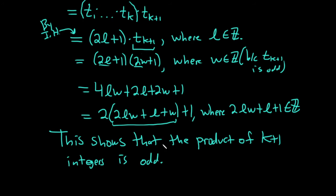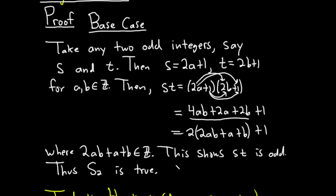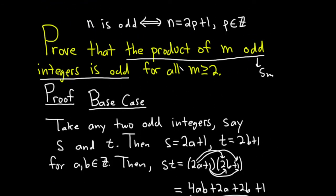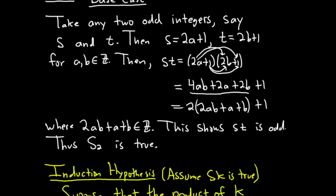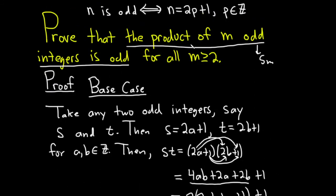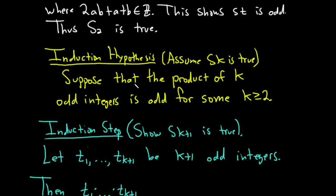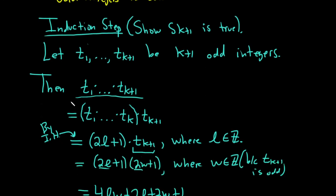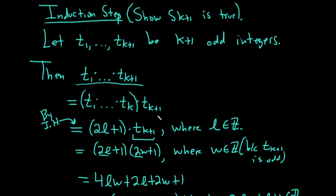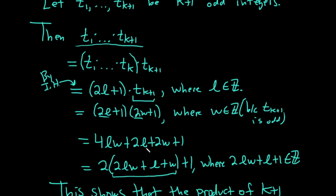Let's recap what we've done. We had to show that the product of m odd integers is odd for all m ≥ 2. We showed the base case was true by considering m=2 and showing the product of two odd integers is odd. In the induction hypothesis, we assumed the product of k odd integers is odd for some k ≥ 2. In the induction step, we showed it's true for k+1 by breaking the product into a product of k integers — odd by hypothesis — times one more odd integer, and odd times odd is odd.